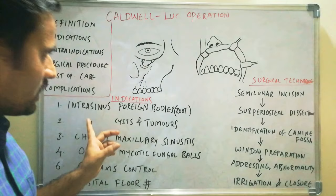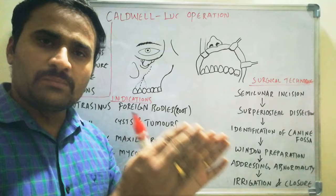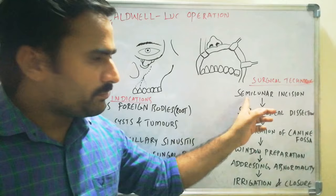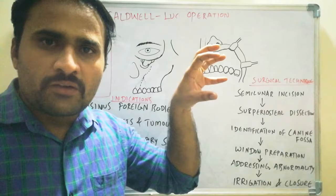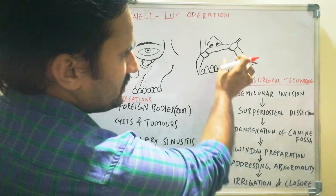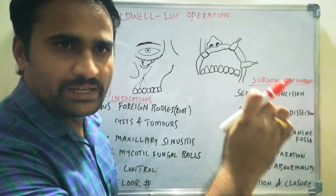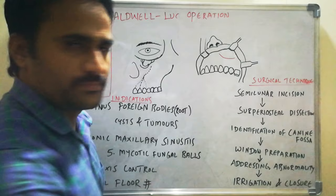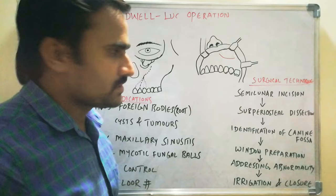For the Surgical Procedure, as you can see in this diagram, the procedure can be done under General Anesthesia or Local Anesthesia. The first step is to make a Semilunar Incision in the Maxillary Buccal Vestibule. This is the Maxillary Arch and Labial/Buccal Vestibule. A Semilunar Incision is taken — semilunar means it is curved, with the convexity facing towards the alveolar process.